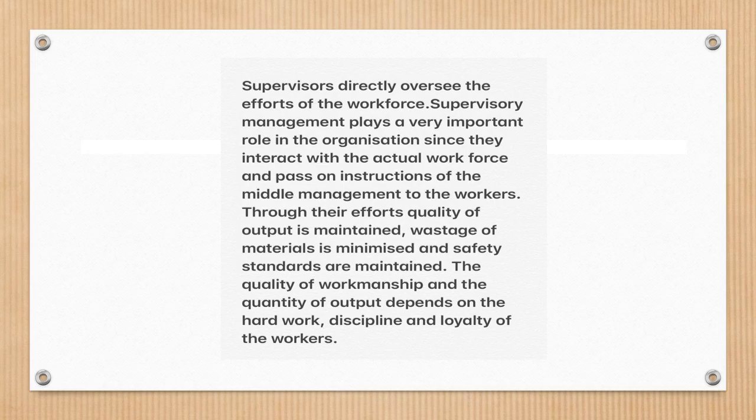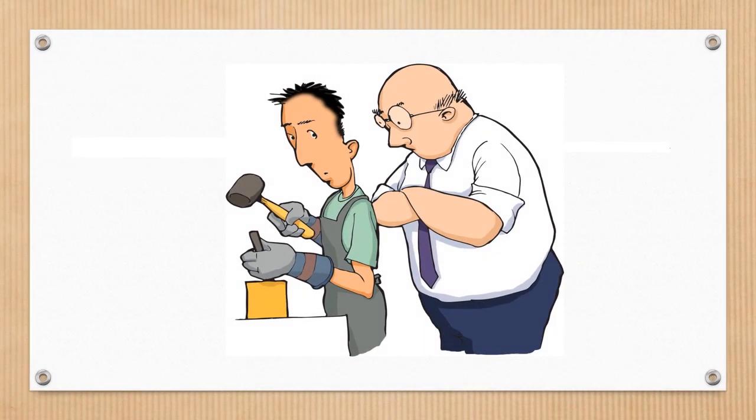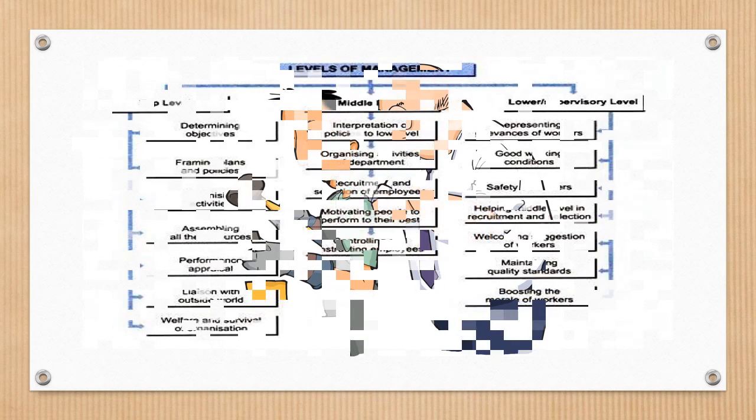Supervisors' efforts directly affect product quality because it is they who direct workers. They also ensure fewer resource wastages and maintain safety standards in the company. So basically, managers from any level are equally important in the organization. Yes, top-level managers are the brain of a company, but lower-level managers are the limbs of the company.